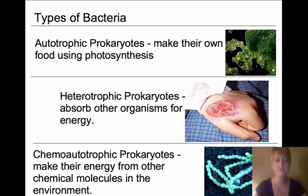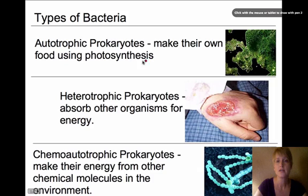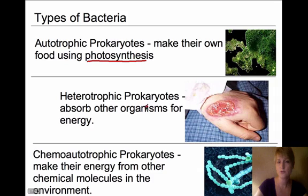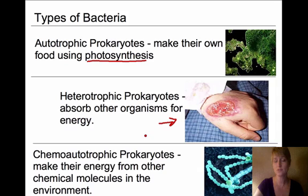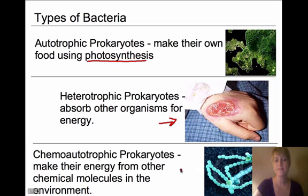There are different types of bacteria. Autotrophic prokaryotes make their own food using photosynthesis. Heterotrophic prokaryotes absorb other organisms for energy — we see these during a bacterial infection, where the bacteria uses our nutrients to keep itself going. For example, flesh-eating bacteria absorbs a person's skin in order to make energy. Chemo-autotrophic prokaryotes make their energy from molecules found in the environment.